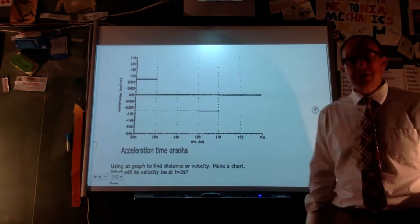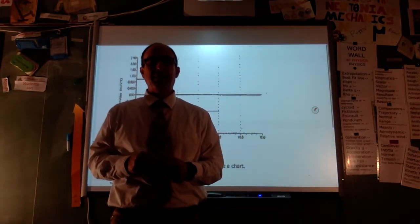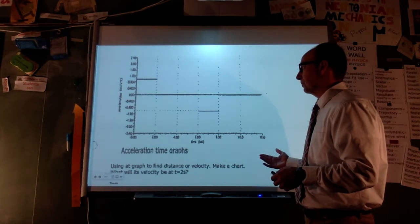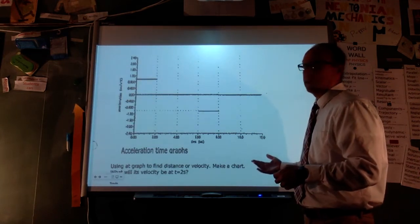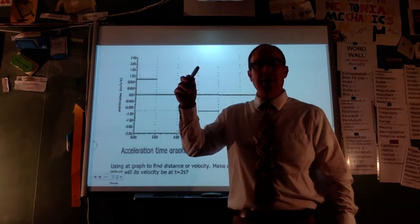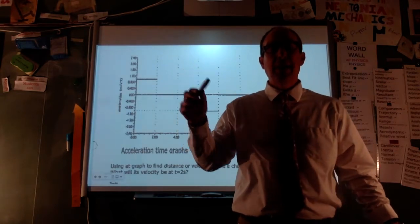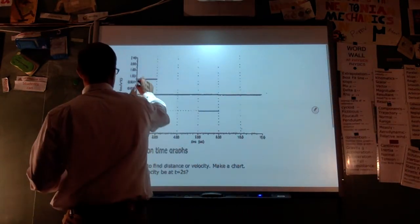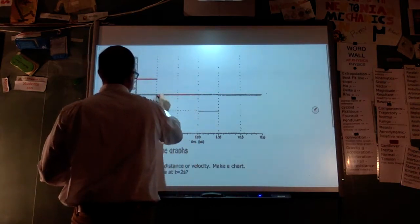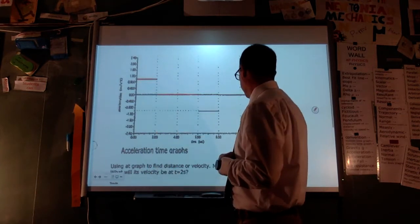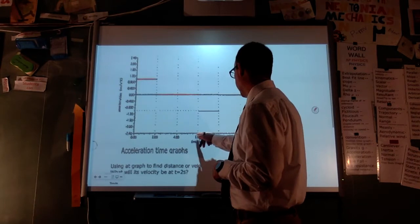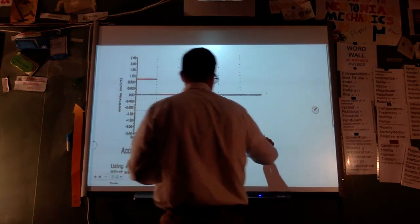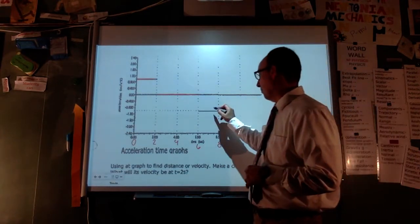Acceleration-time graphs — we saw these on the parachuter problem. They're just horizontal lines. We assume an object goes from one acceleration to another essentially instantaneously, so we don't draw a connecting line — we just jump. This graph stays at a positive value for about the first 2 seconds, then stays at 0, and then goes to negative 1 for about 2 seconds at the end.